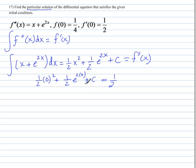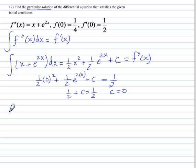Let's solve for C. The first term is 0, and E to the 0 is 1, so ½ times 1 is ½. So ½ plus C equals ½, which means C is 0. Therefore F prime of X is ½X² plus ½E to the 2X plus 0.